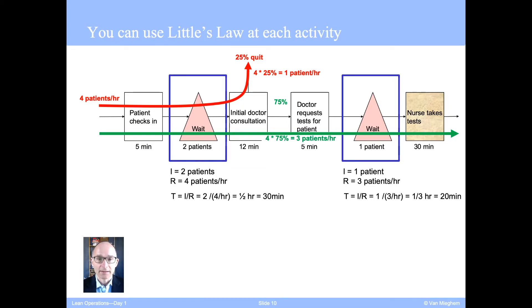Now that we have all the activity times, we can directly calculate the average length of stay of a quitting patient. Five plus 30 minutes of wait in the first buffer plus 12 minutes consultation gives us 47 minutes. Similarly, summing the flow times of the green route, we get 103 minutes for the length of stay of the patients that go through all the activities. On average, what is the flow time of an average patient?